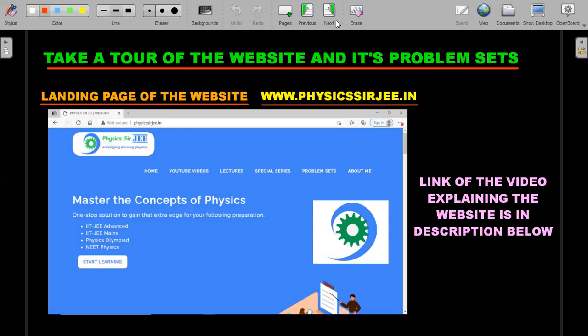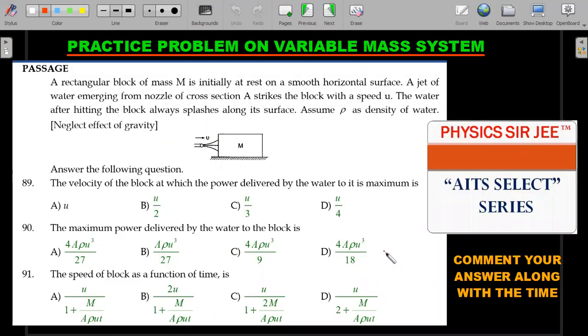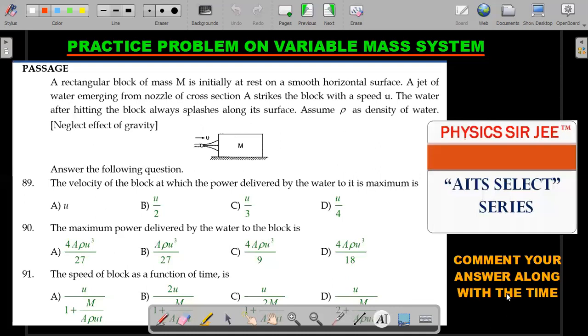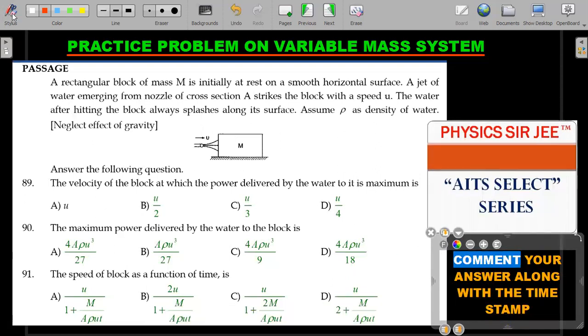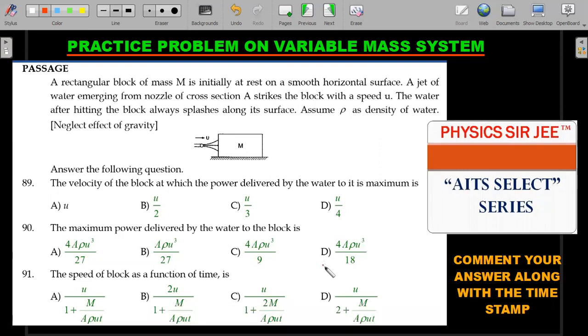Here's the practice problem I promised. This appeared in AIITS Select series in one of the reputed institutes' examination three or four years ago. My students were writing it and found it slightly difficult at that point of time. Now most of you will be able to answer it. I would love to see your comments for the answers along with the timestamp. Please make sure you answer it with the timestamp so I can respond whether you're doing it right or not. If many people struggle to answer it, I'll definitely answer it in the upcoming AIITS Select series. It's a comprehension with three questions that follow.